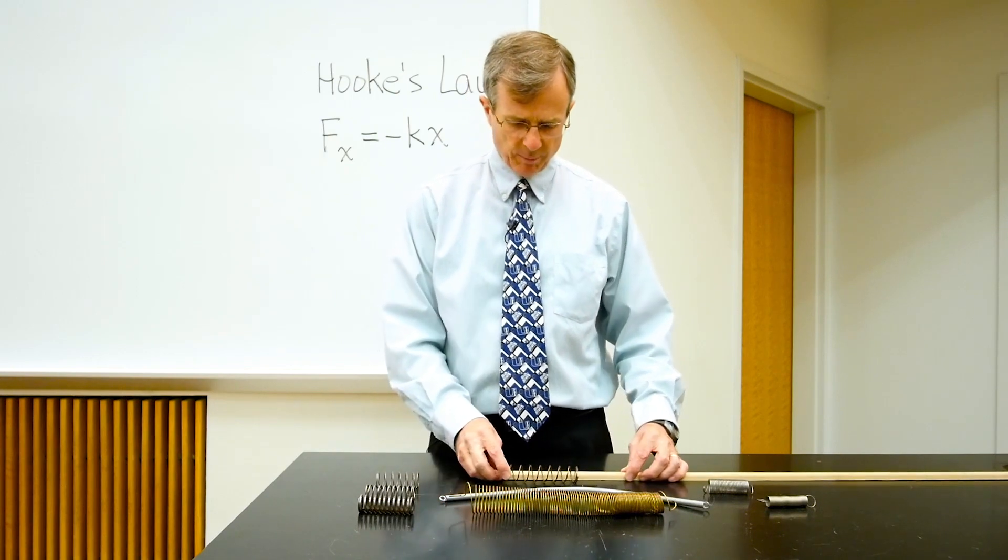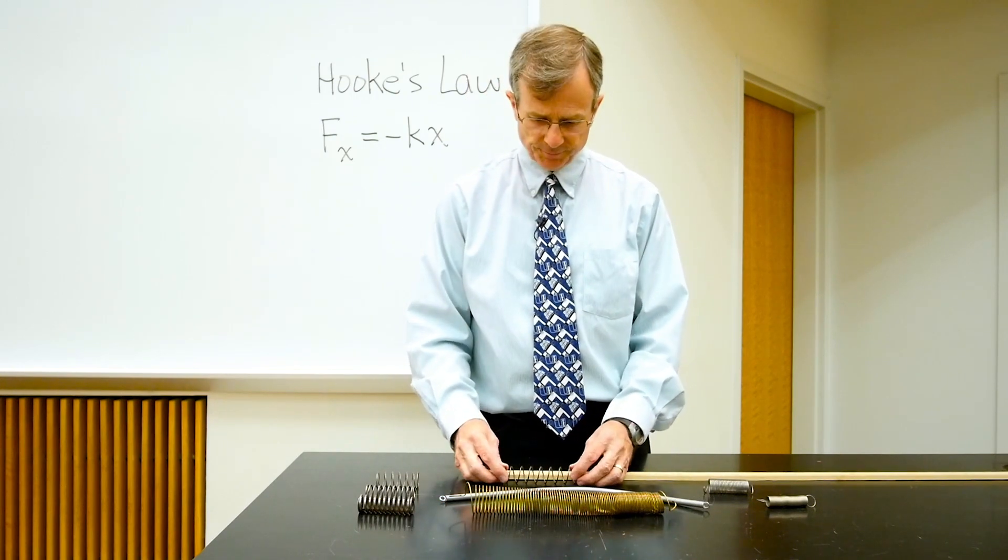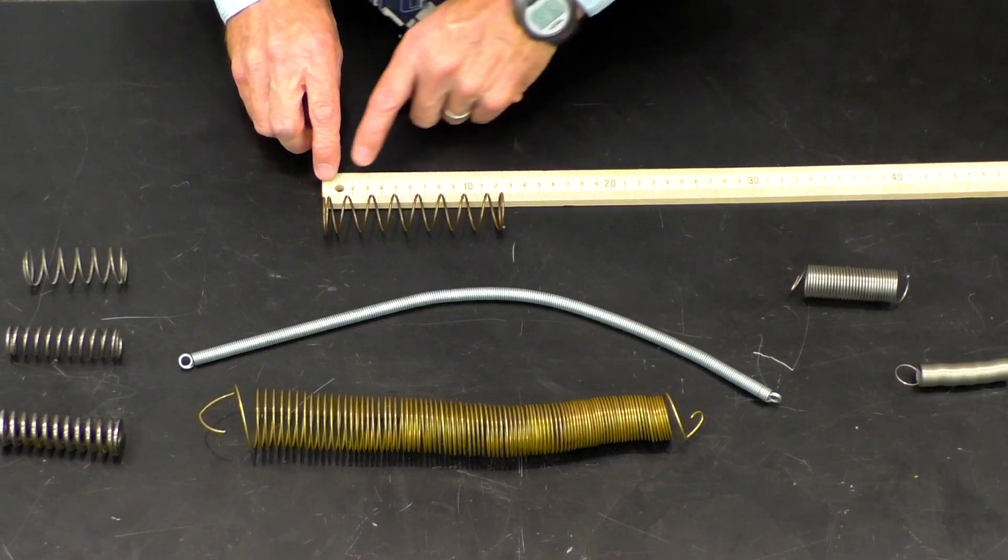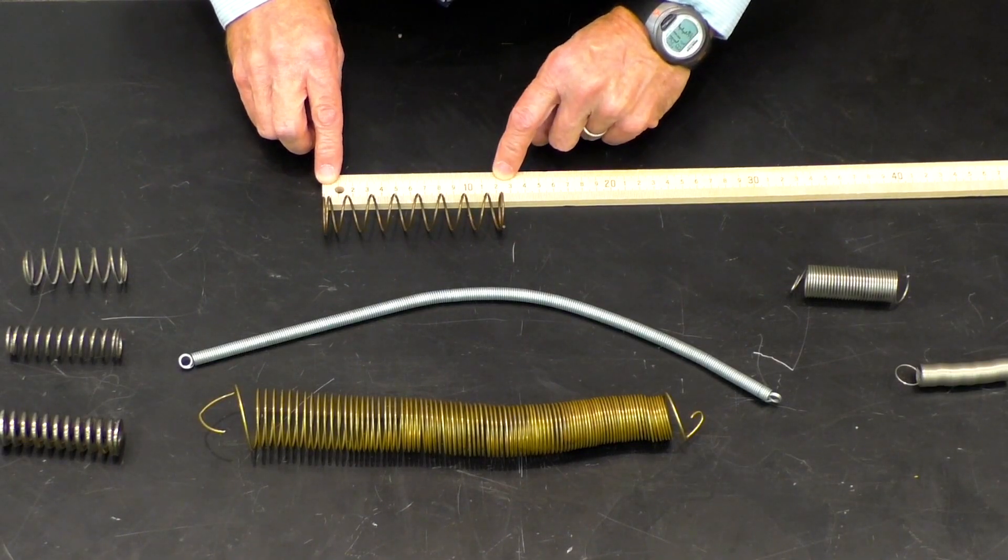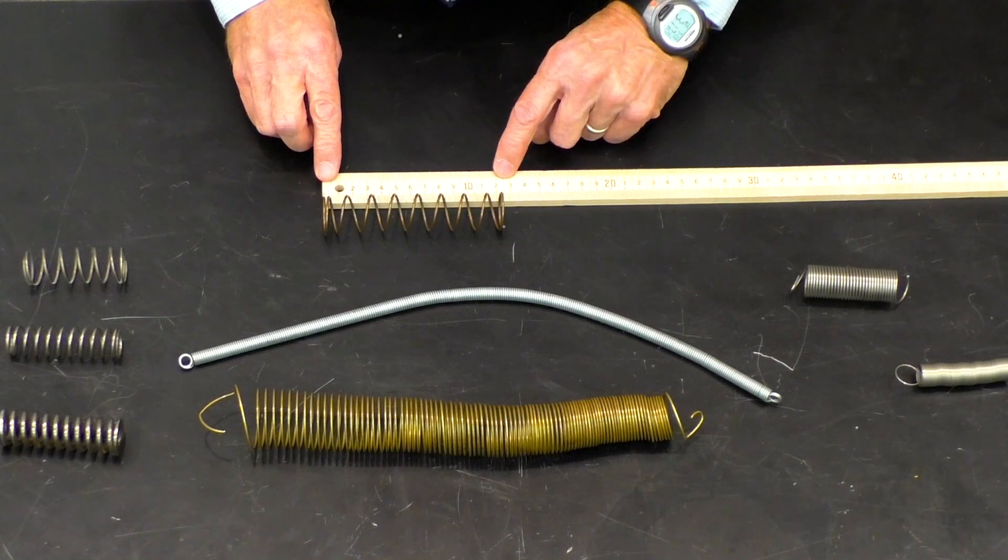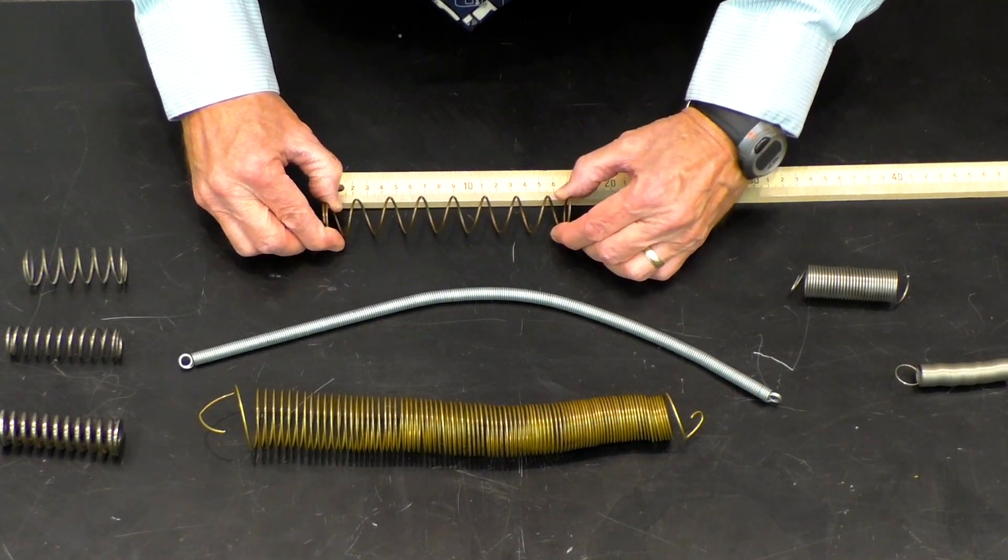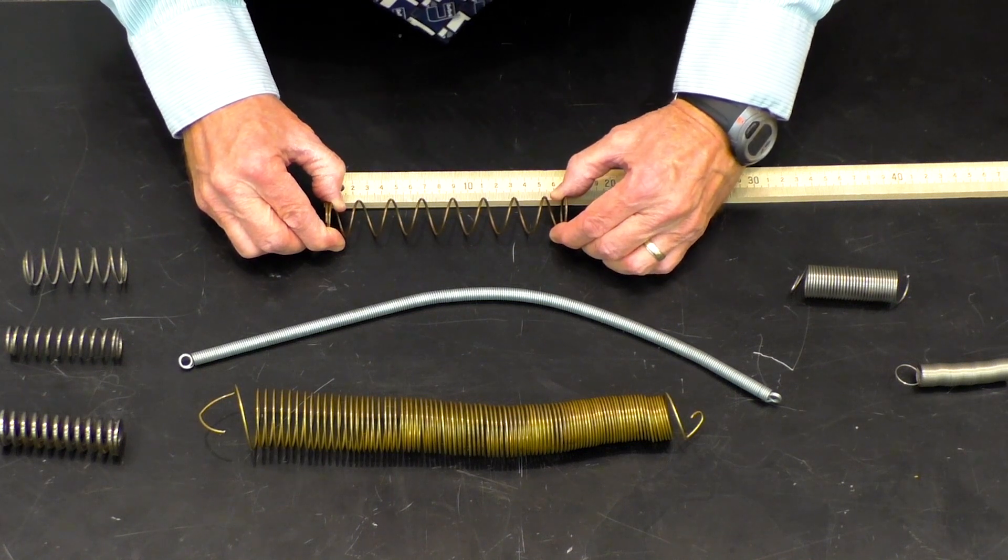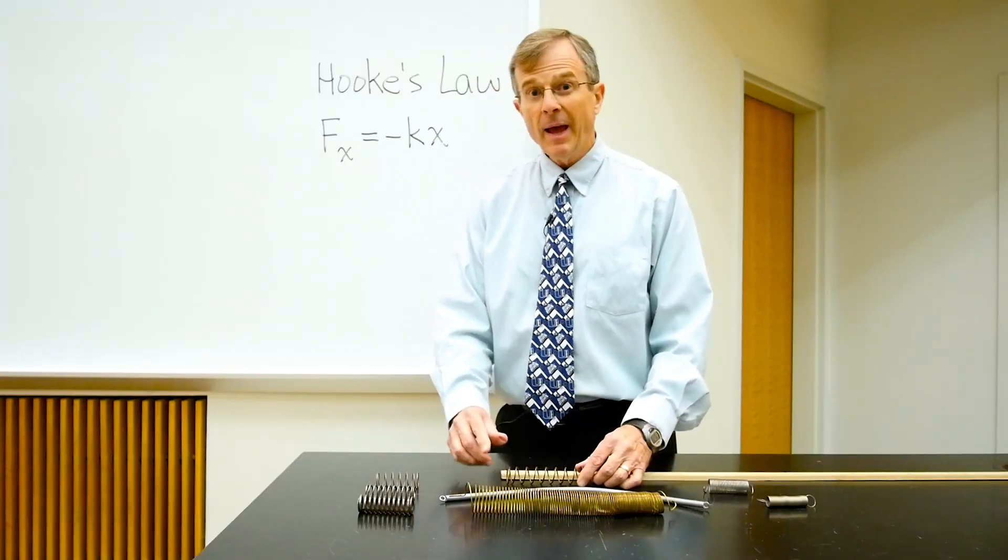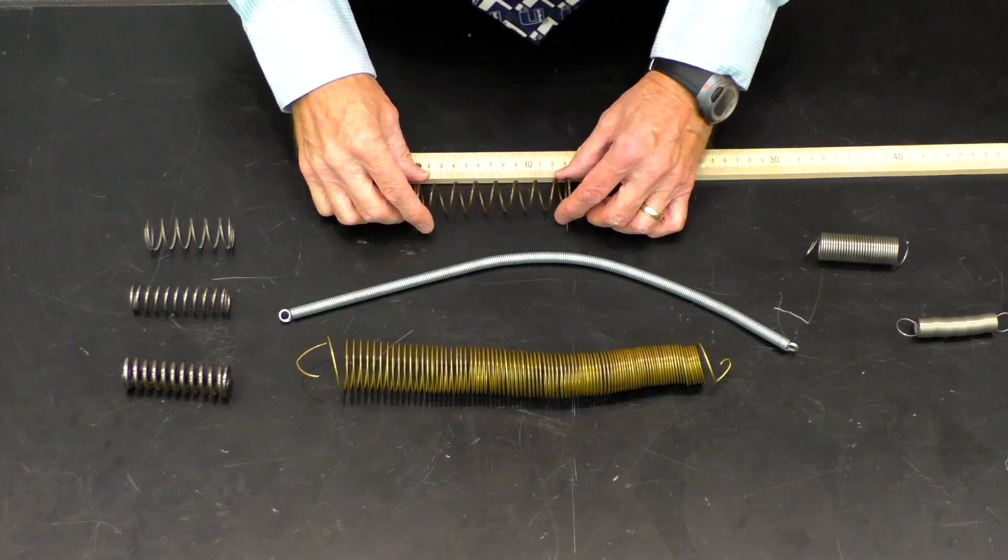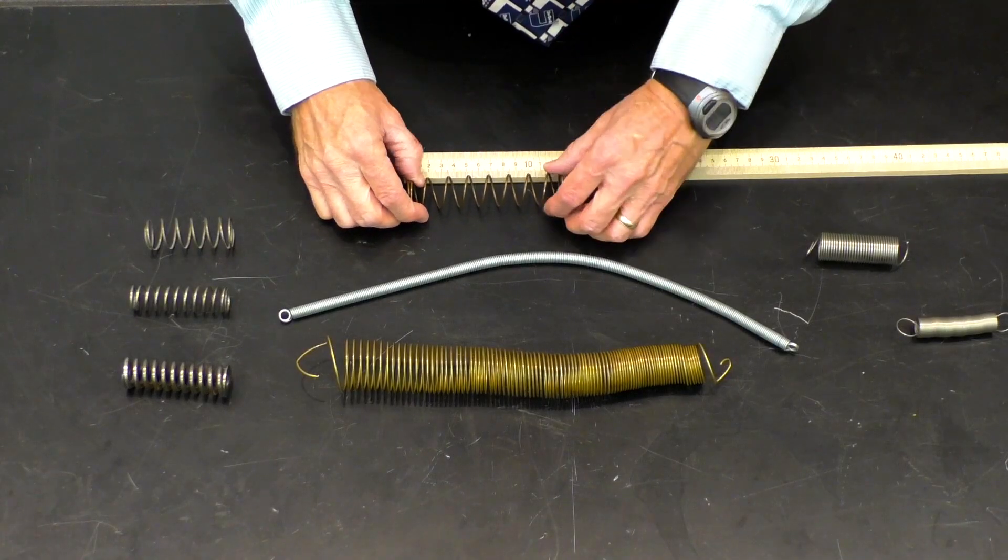So let's show, for example, for this spring, its equilibrium length is about 12 centimeters, as you can see here. If I stretch it out to a length of 17 centimeters, then in this case, x will be 5 centimeters, from 12 out to 17.